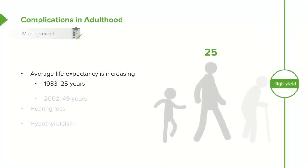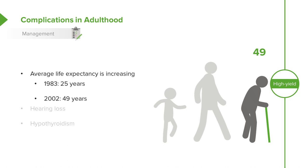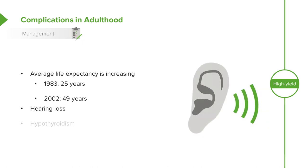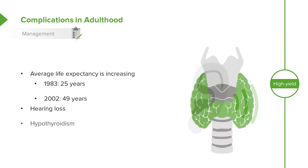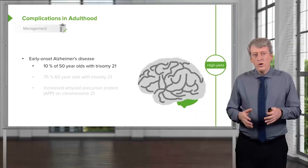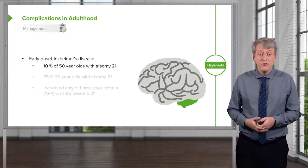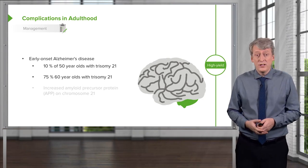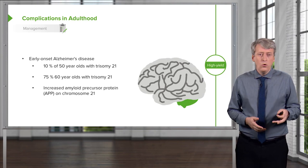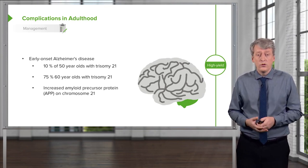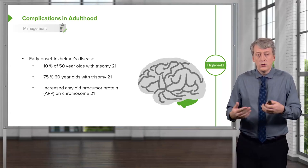Patients with Down syndrome have an increasingly longer life expectancy. As recently as 1983, the average life expectancy was 25, and by 2002 it was 49, largely due to better management of complications. We need to address hearing loss with hearing aids or implants, and treat hypothyroidism aggressively. An important adult complication is early onset Alzheimer's disease, affecting about 10% of 50-year-olds and 75% of 60-year-olds with trisomy 21, because the amyloid precursor protein gene (APP) is located on chromosome 21, giving them a genetic predisposition.